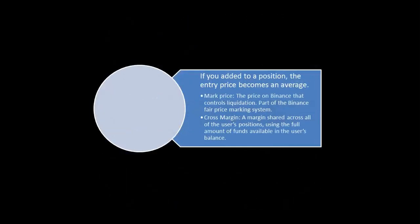If you add to a position, the entry price becomes an average. For instance, if you enter at ten dollars, eleven dollars, and twelve dollars, you add those three prices and divide by three — the average you get is your average entry price.